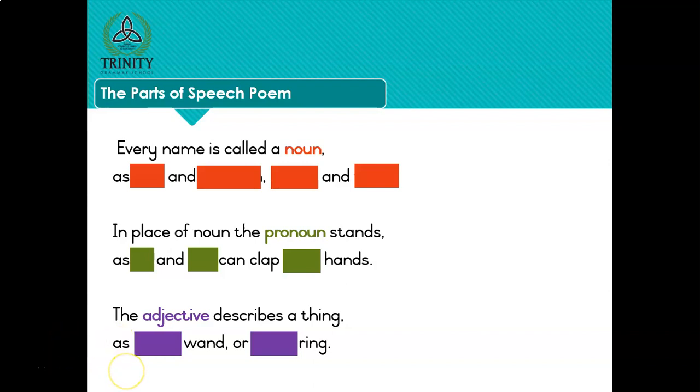Every name is called a noun, and try and guess which words are under the little blocks before I click on them. Every name is called a noun as field and fountain, street and town.